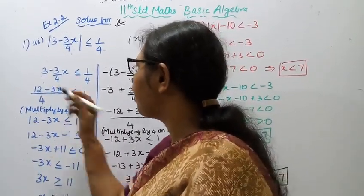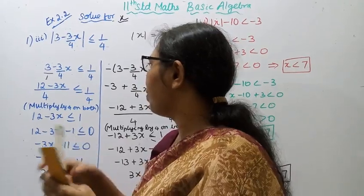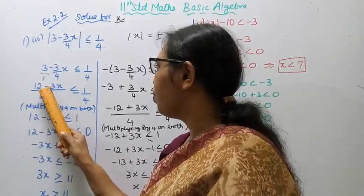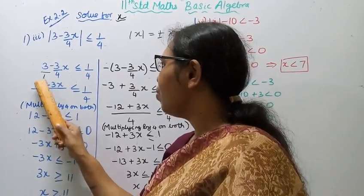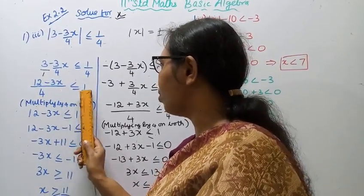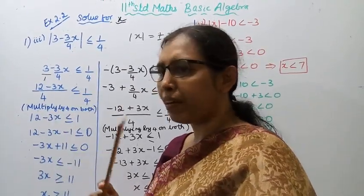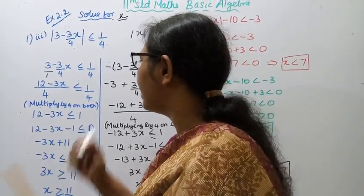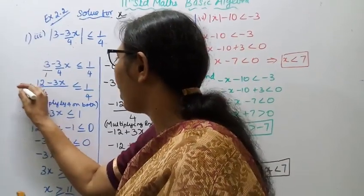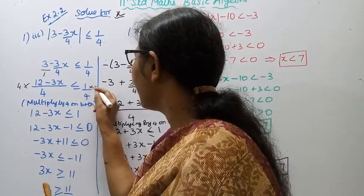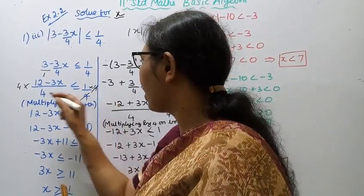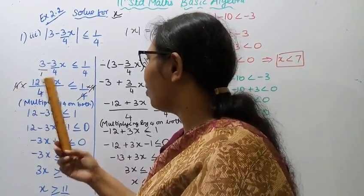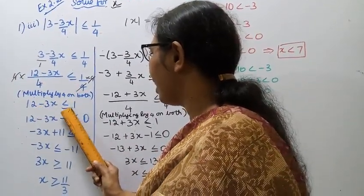First case: 3 minus 3/4 x less than or equal to 1/4. Taking LCM — 3 by 1, cross multiply: 4 into 3 gives 12, and 1 into 3x gives 3x, divided by 4, less than or equal to 1/4. Multiplying by 4 on both sides, the 4s cancel.